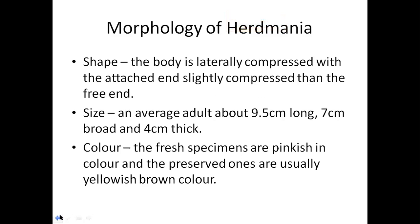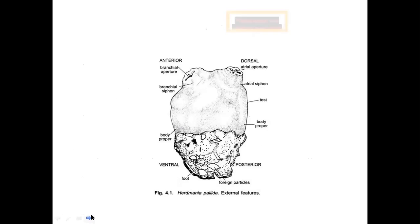Now let us consider the size of the organism. An average adult measures about 9.5 cm long, 7 cm broad, and 4 cm thick. Regarding colour, the freshest specimens are pinkish in colour, and because we see them usually in the laboratory, the laboratory specimens look yellowish-brown in colour. So we have seen the shape, size, and colour.